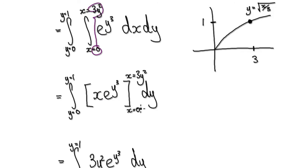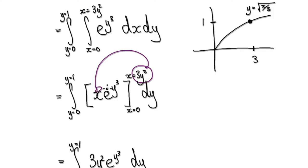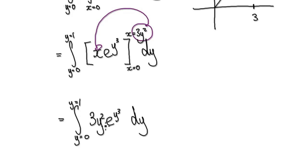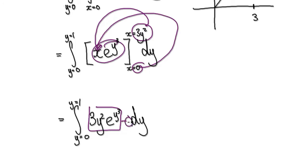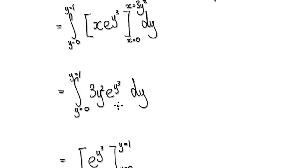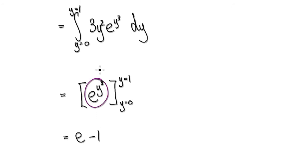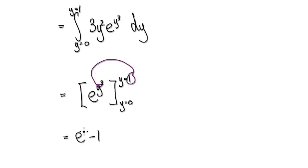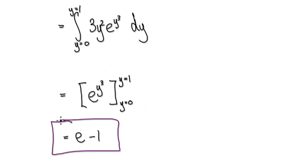Substituting 3y² into x gives the inner result; putting zero in makes it zero, so you subtract zero. Now integrate with respect to y — that gives this expression evaluated from zero to one. Putting one in gives e to the power one; putting zero in gives one. So the final answer is e minus one.